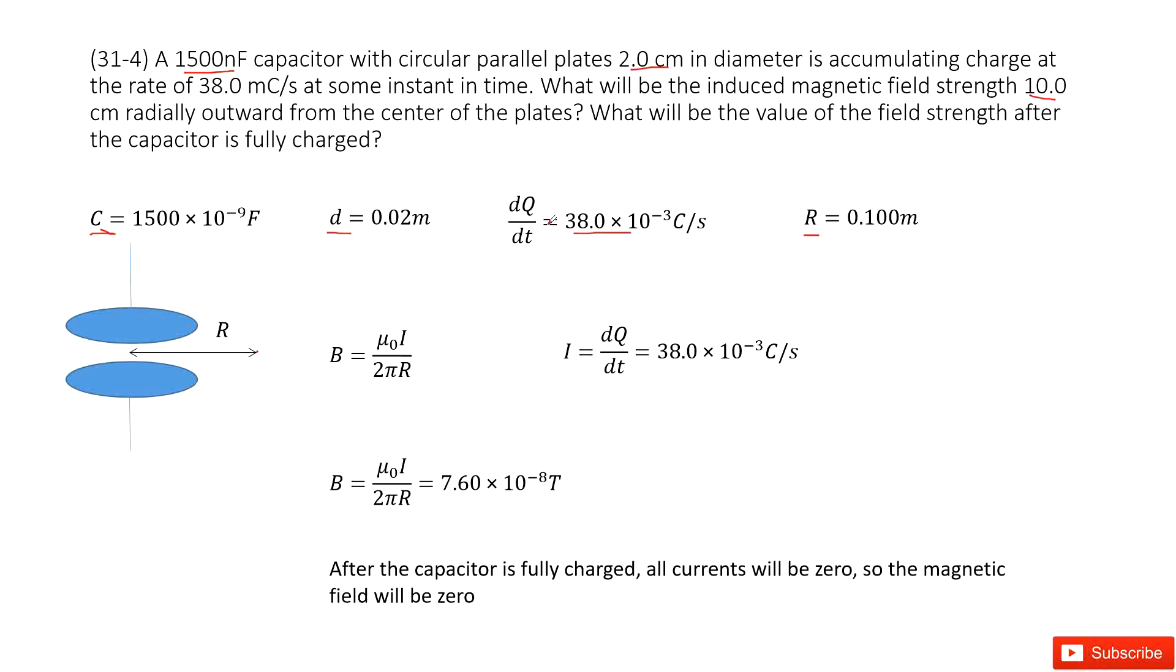Now the charge changing, dq over dt, is very straightforward. We can see we have another quantity to describe it. This is a current. So this actually gives you the current.